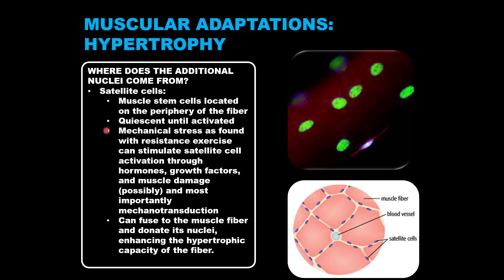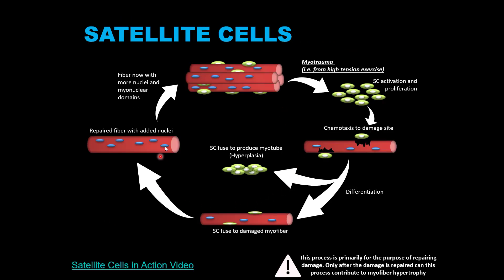When these satellite cells wake up, in summary they multiply or proliferate and eventually donate their nucleus to the muscle fiber, giving the fiber new nuclei and new myonuclear domains. One key point is that this process of satellite cell activation and nuclei donation is primarily for the purpose of repairing muscle fiber damage, and it is only after the damage is repaired that this process can contribute to increasing the capacity for myofiber hypertrophy.